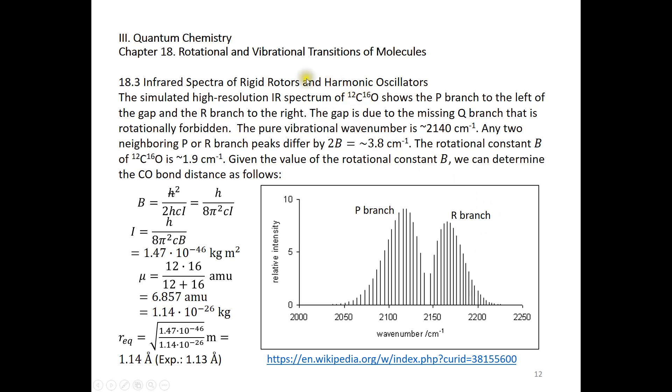Now let's look at the simulated high-resolution infrared of carbon monoxide. We have P branch to the left of the gap and R branch to the right of the gap. Because P branch involves rotational de-excitation, we need less energy here. R branch involves rotational excitation, so we have more energy here. More energy means more wave numbers. Less energy, less wave numbers. In the middle, we have a wider gap of 4 times B.